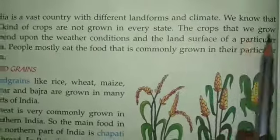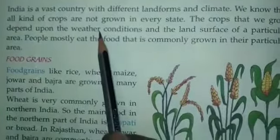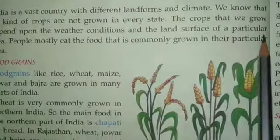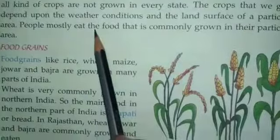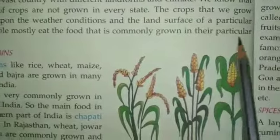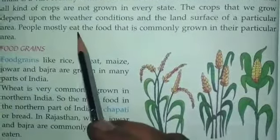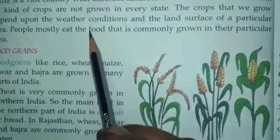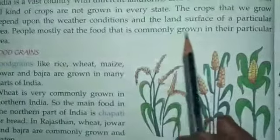We know that all kinds of crops are not grown in every state. The crops that we grow depend upon the weather conditions and the land surface of a particular area. People mostly eat the food that is commonly grown in their particular area — they eat whichever food grain they grow themselves.